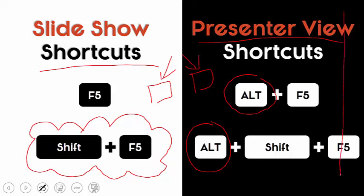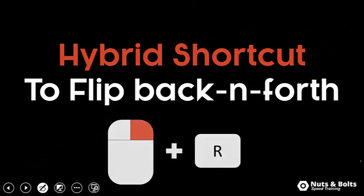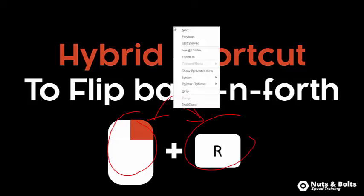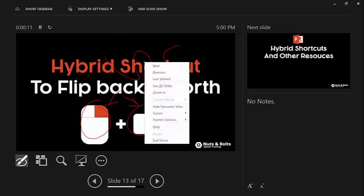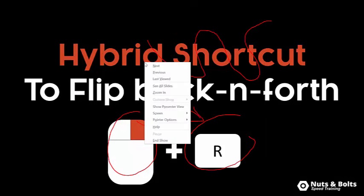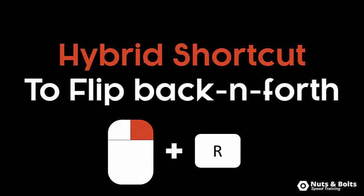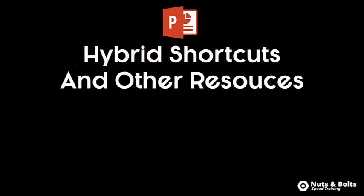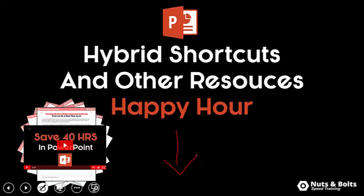Now the hybrid shortcut to flip back and forth between the two views — there's no dedicated keyboard shortcut for this, so it's right-click on your mouse, then hit R on your keyboard. That's the hybrid mouse-and-keyboard action. Right-click, hit R, and it takes you to the presenter view of that slide. Right-click, hit R again, and you jump to slideshow view. This is faster than escaping out and trying to hit a keyboard shortcut. If you want to erase all your ink, hit E. For more hybrid shortcuts and PowerPoint resources — including PDF cheat sheets and the 'Save 40 Hours in PowerPoint' miniseries — look for the links directly beneath this video.